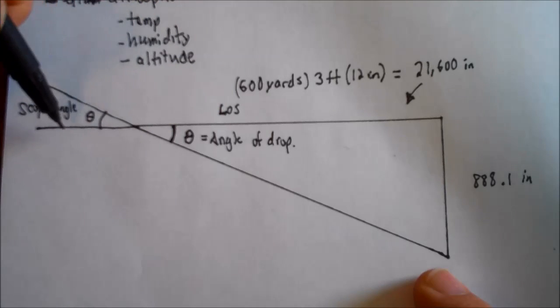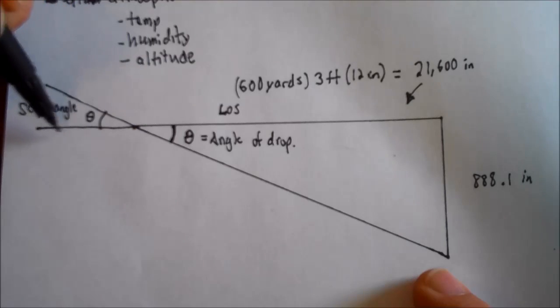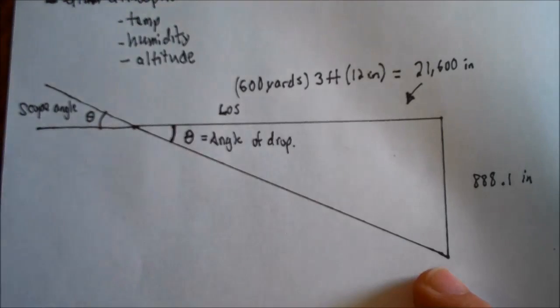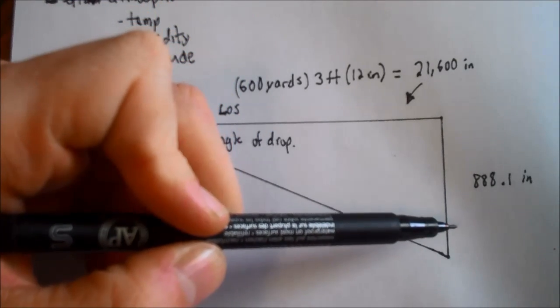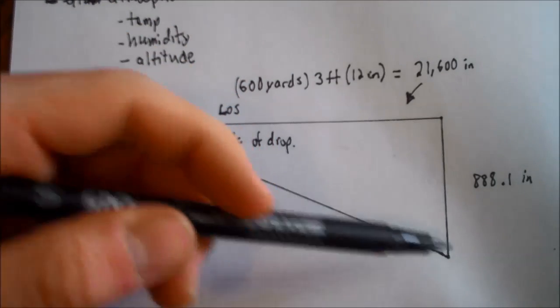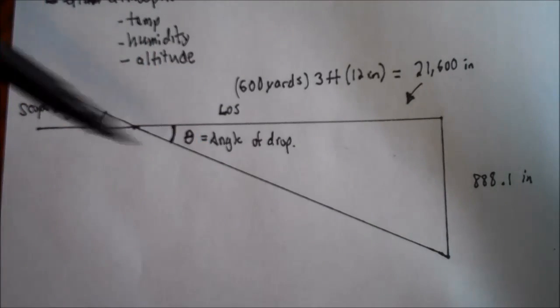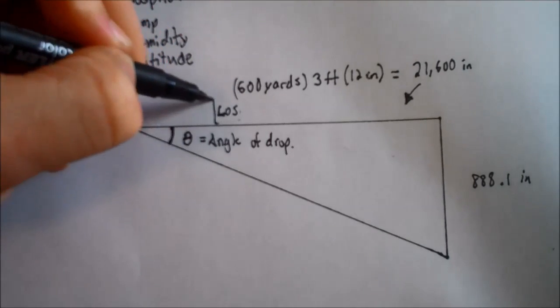The idea here is that if you shot a laser down the bore of the weapon, this is where the laser would be pointing at 600 yards. It's obviously perfectly straight and level. But then when you account for the 888.1 inches of drop, then you get something a lot lower. So you need your scope to be looking at that 888.1 inches lower than the LOS on top here.